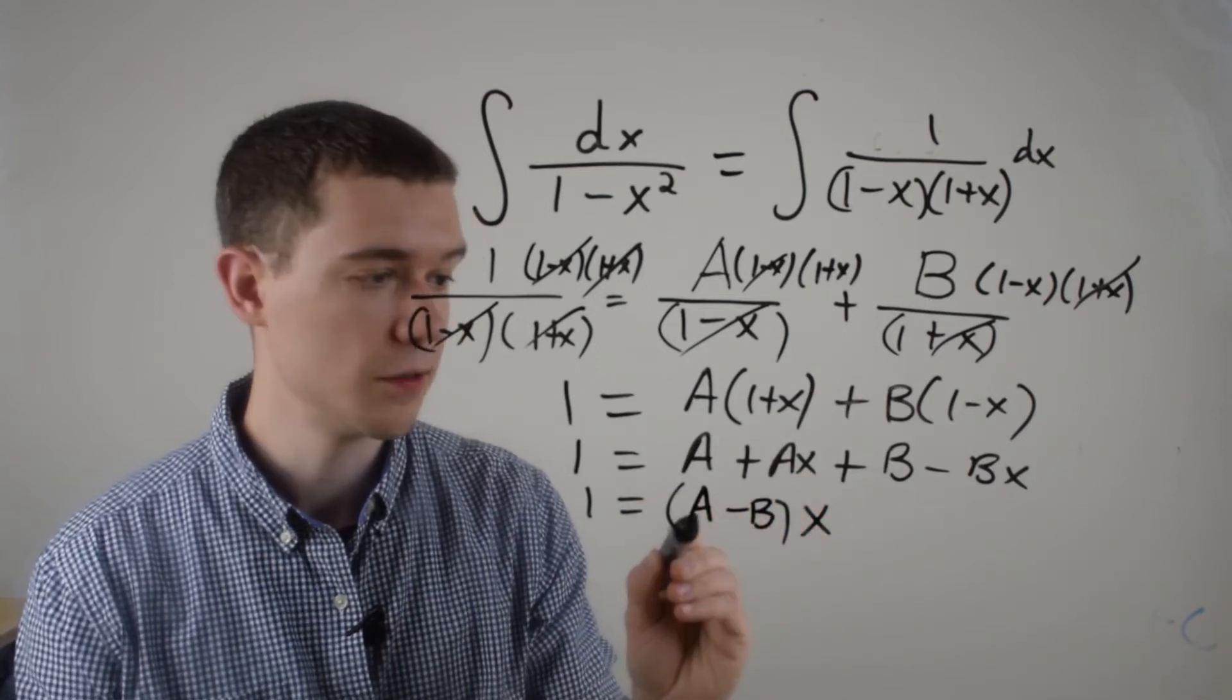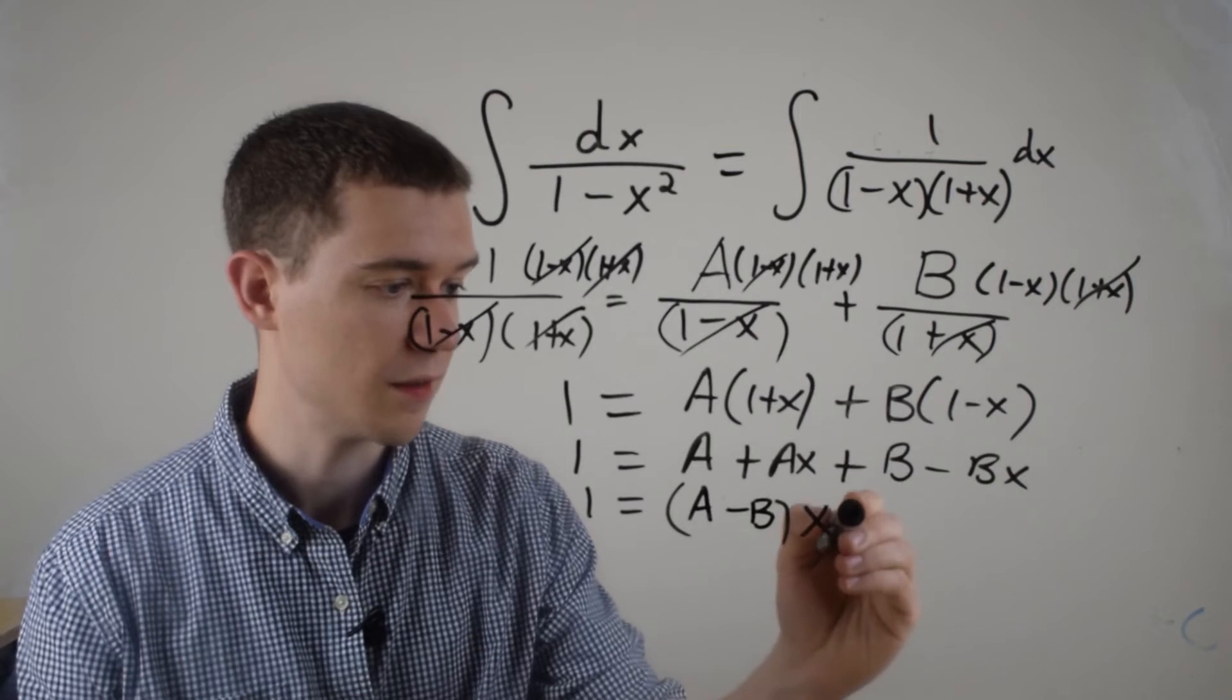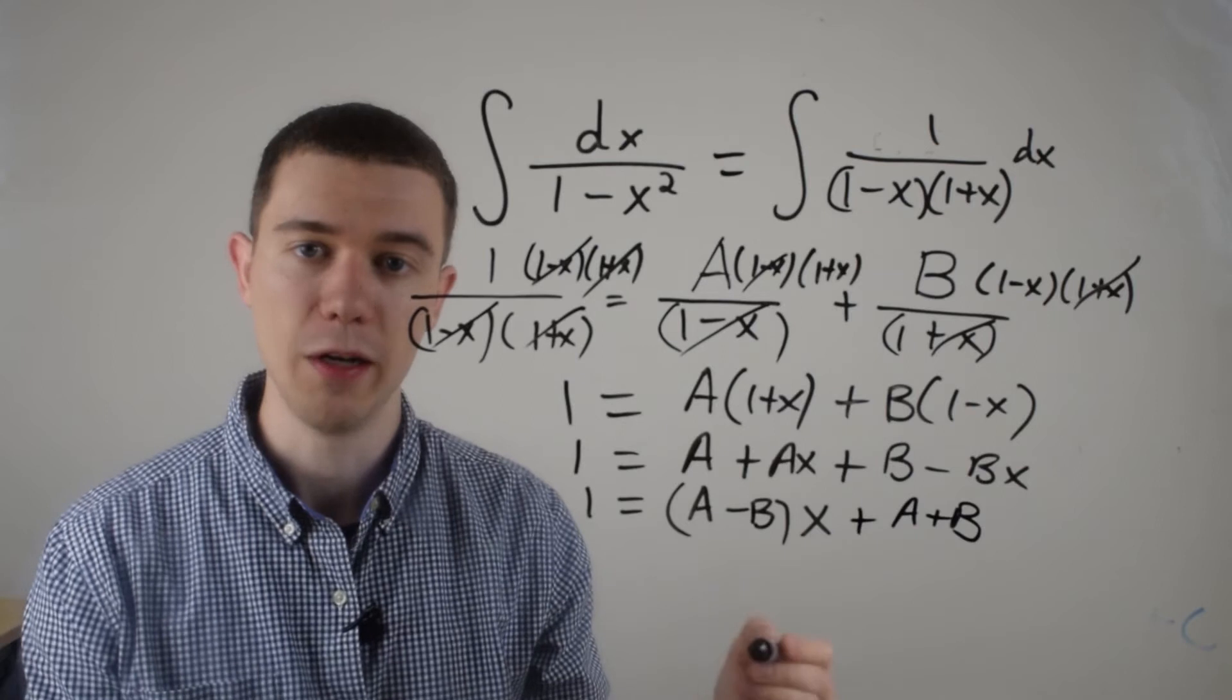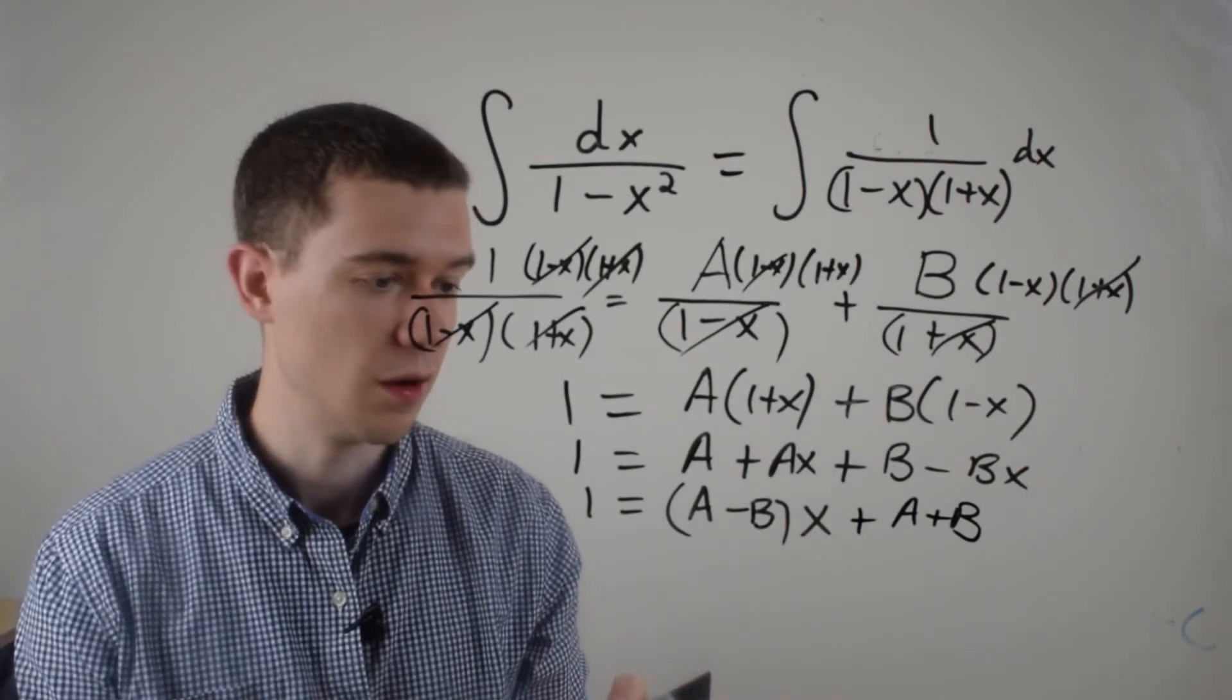And how many constants do I have? Well, A and B are constants. So this is plus A plus B. So all I've really done is a rearrangement and factoring of x.